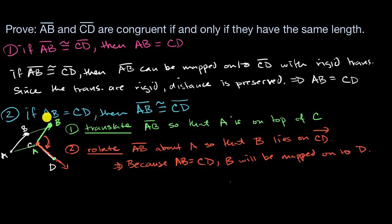And just like that, we've shown that if the segment lengths are equal, there is always a set of rigid transformations that will map one segment onto the other. Therefore, since A and B have been mapped onto C and D, we know that segment AB is congruent to segment CD. And we are done. We have proven what we set out to prove both ways.